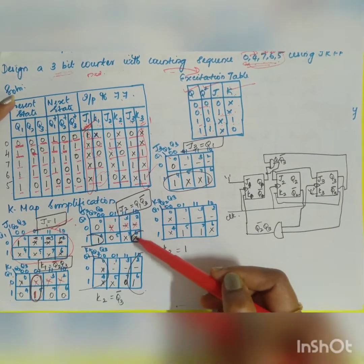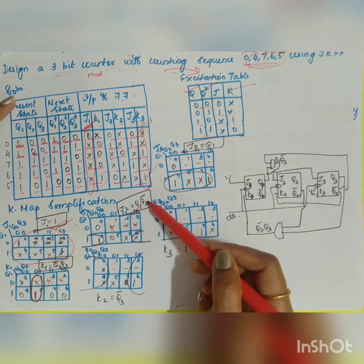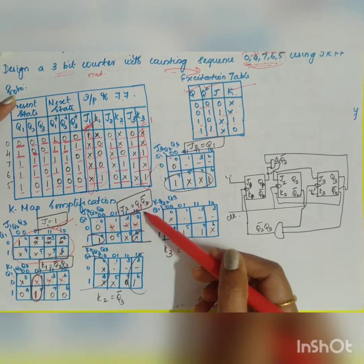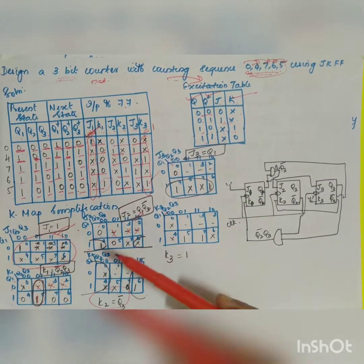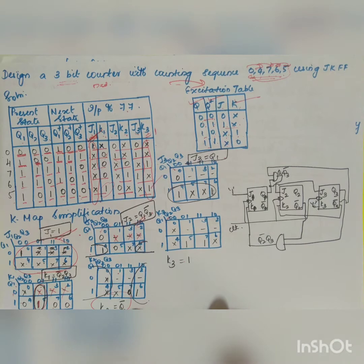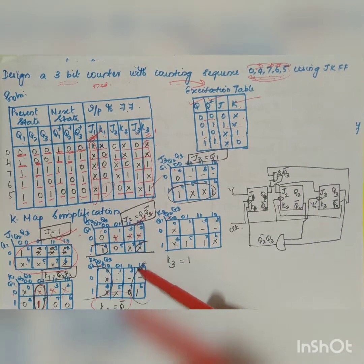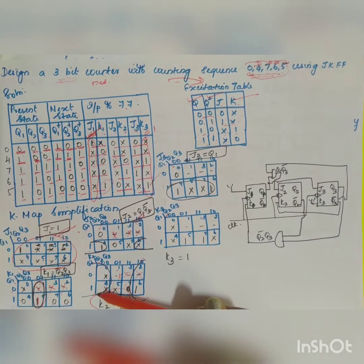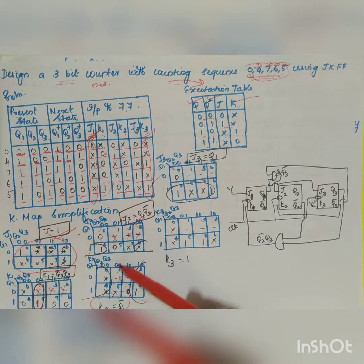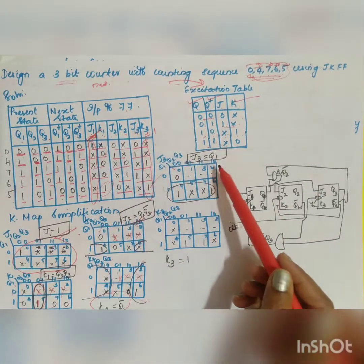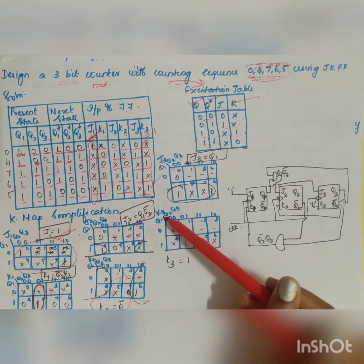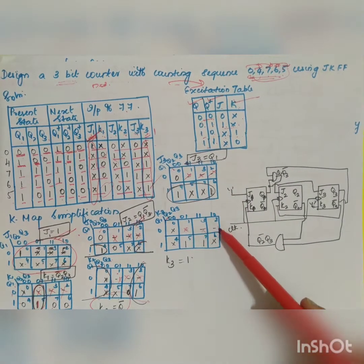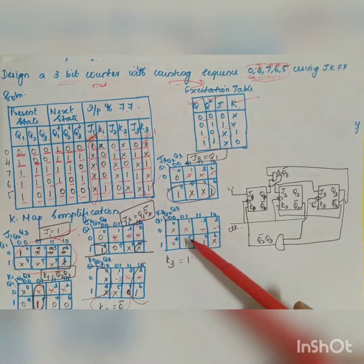For J2, grouping with don't-cares gives J2 = Q1·Q3̄. For K2, grouping gives K2 = Q3̄. For J3, the result is J3 = Q1. For K3 = 1 as noted. Unused states 1, 2, 3 are treated as don't-cares throughout.